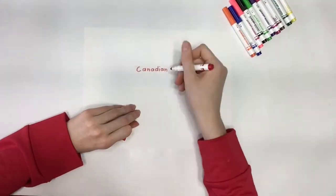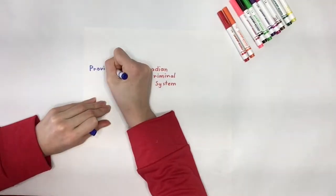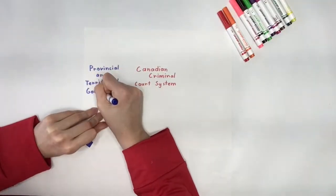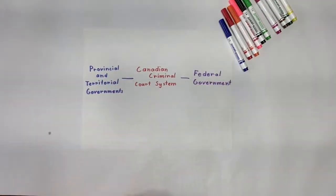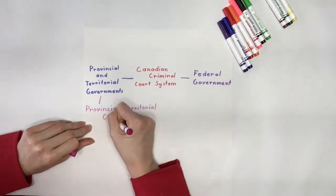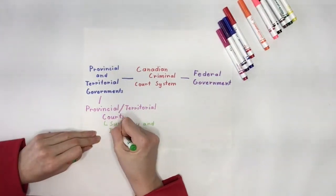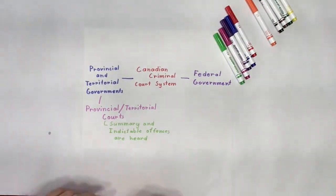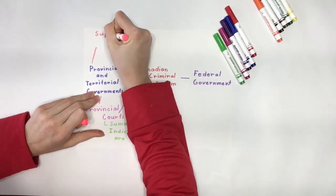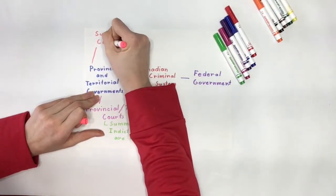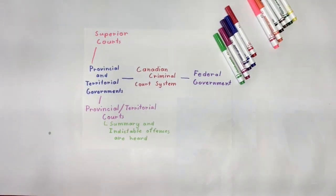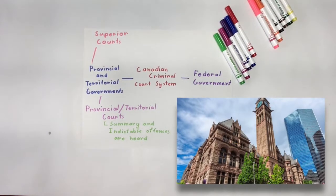The responsibility of the Canadian criminal court system is divided between the provincial and territorial governments and the federal government, which writes and formulates the system as well as establishes various courts. The lowest level is the provincial courts, where summary offenses and indictable offenses are heard. Superior courts of the province are the highest courts in a province, and they handle both civil and criminal matters. Most of the time, both a judge and a jury are used during a trial.